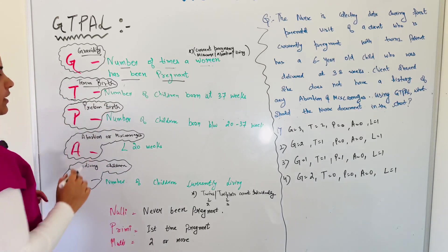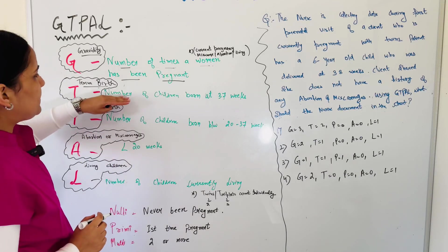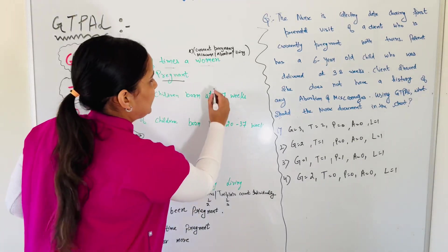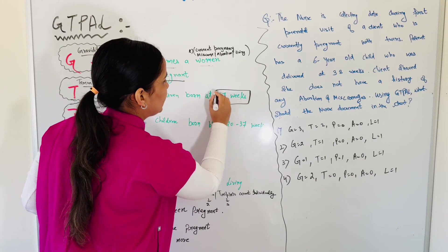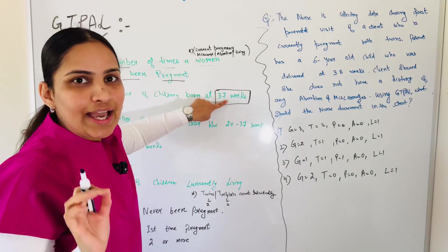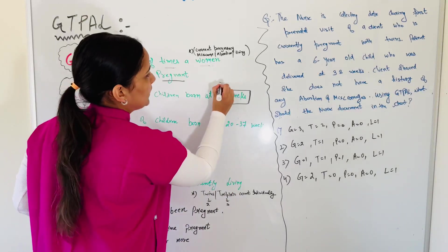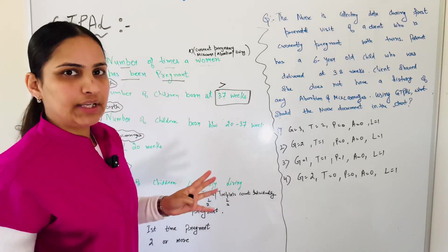T is term birth. This means number of children born at 37 weeks. So the key word is here, 37 weeks. Term means complete 9 months or more than that. So 37 or above 37.